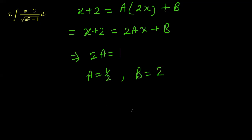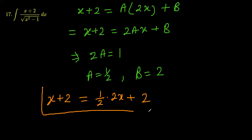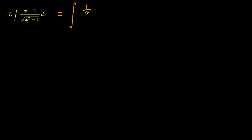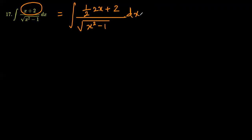This means x plus 2 in the numerator can be written as one half times 2x plus 2. That is what we substitute into the numerator of this integral. In place of x plus 2 we write one half times 2x plus 2, all divided by the square root of x squared minus 1. We can now split this into two parts.